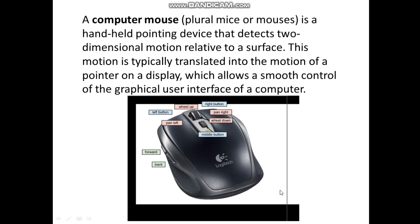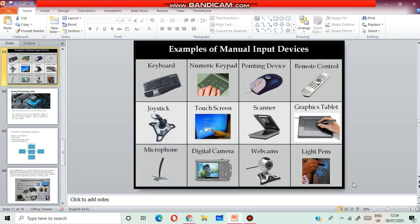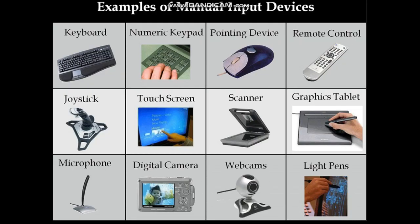There are different types of mouse, like the commonly used mechanical mouse which uses a ball and roller system, or the optical mouse which uses an LED light source and sensor. Examples of manual input devices include: keyboard, numeric keypad, pointing device, remote control, joystick, touch screen, scanner, graphics tablet, microphone, digital camera, webcams and light pens.